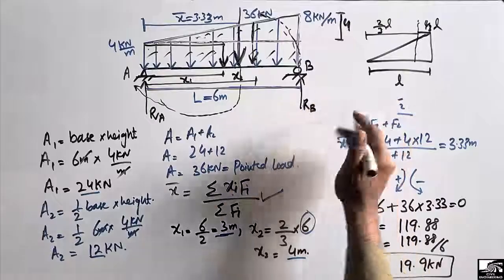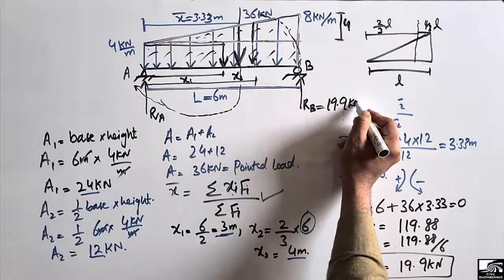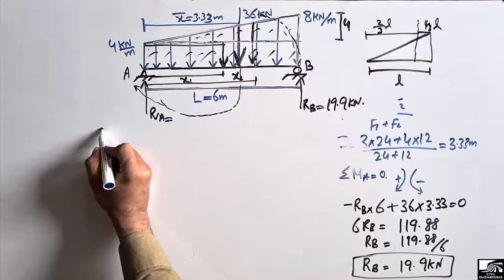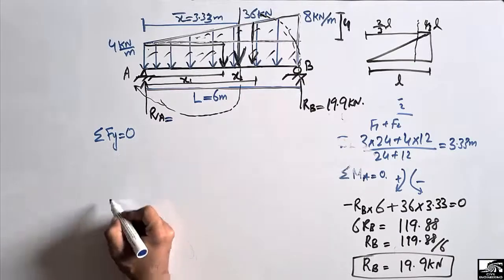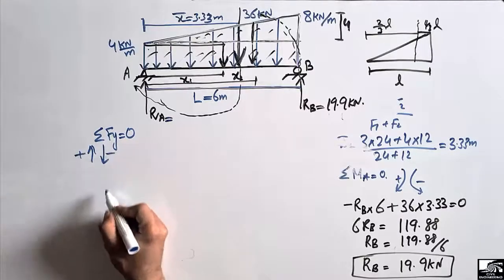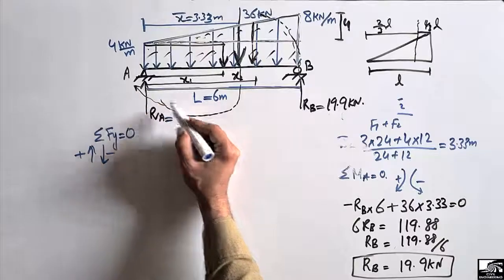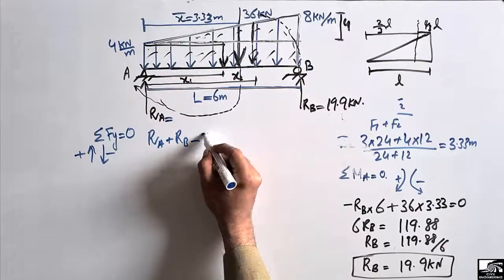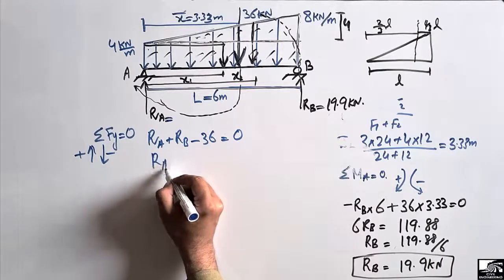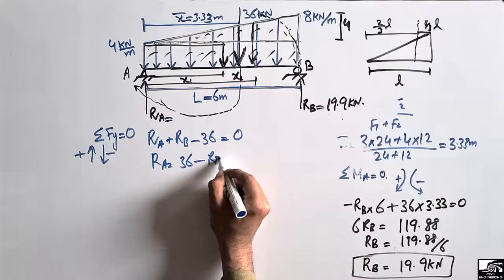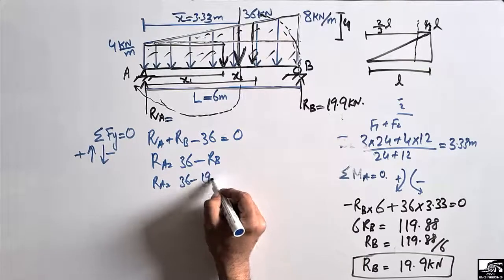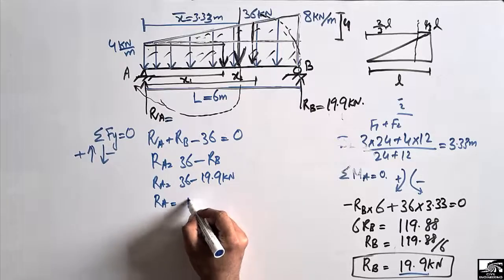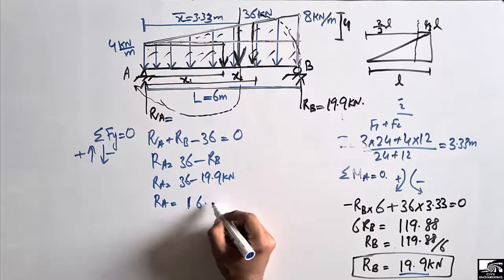RB is 19.9 kN. Now we find RA using the vertical equilibrium equation: ΣFv = 0. Taking upward forces as positive and downward as negative: RA + RB − 36 = 0. Therefore RA = 36 − 19.9 = 16.0 kN.